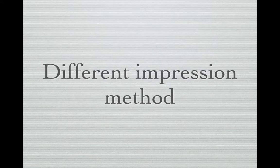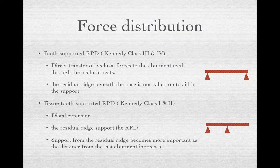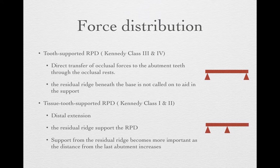In removable partial denture impressions, several different impression methods have been introduced. The reason is that we are dealing with two different parts: one is the tooth and one is the soft tissue. If we are treating a tooth-supported RPD, basically all the force will be held or supported by the tooth only — there will be no movement when we chew or dislodge the RPD. When you treat Kennedy Class 3 or Kennedy Class 4 cases, which means tooth-supported RPD, the residual ridge does not really provide support.